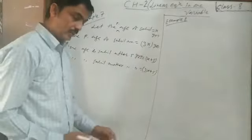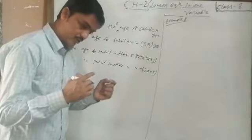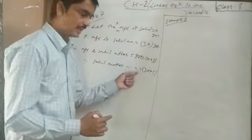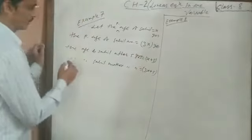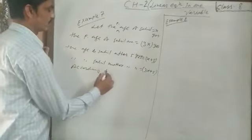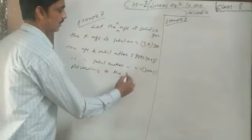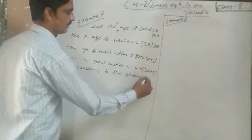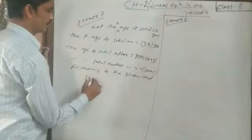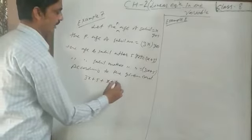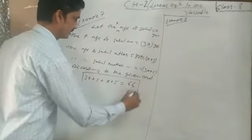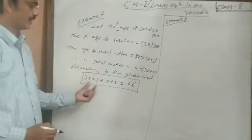According to the question, the sum of the ages of Sahid and his mother after 5 years is equal to 66. So according to the given condition, we form the equation: 3X plus 5 plus X plus 5 equals 66. This is the way to form a linear equation.